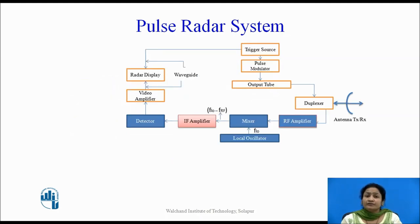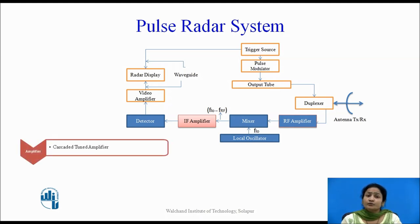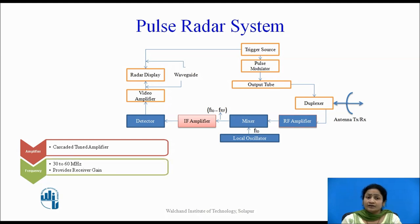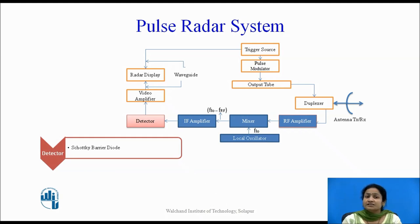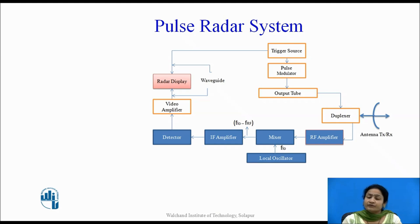The IF amplifier is a cascaded tuned amplifier. It amplifies the signal, eliminates noise, and provides the required bandwidth. For an air surveillance radar system, the frequency range is 30 to 60 MHz with a 1 MHz bandwidth. The gain of the receiver is totally dependent on the IF amplifier, so it provides the receiver gain. The output of the IF amplifier is fed to the detector circuit, which uses a Schottky barrier diode to detect and recover the original signals.